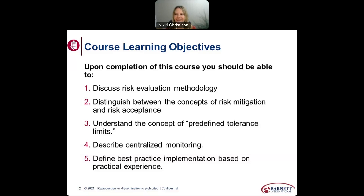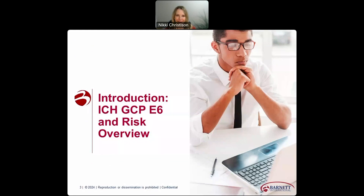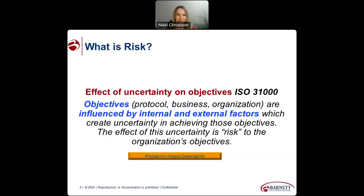So, let's get started. Let's talk a little about the background, how we got here, and why this is applicable to what we do. What is actually risk? It is the effect of uncertainty on objectives. Per ISO — the International Standards on Organizations — 31,000: objectives, protocol, business, and organization are influenced by internal and external factors, which create uncertainty in achieving those objectives. The effect of this uncertainty is risk to the organization's objectives.